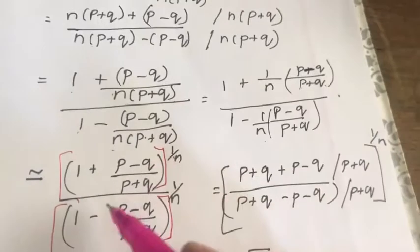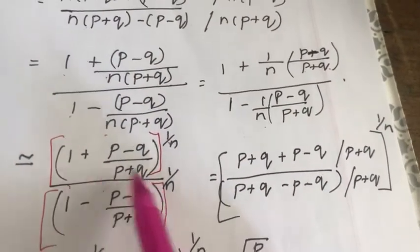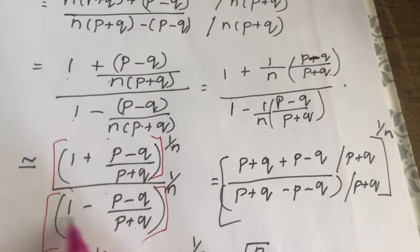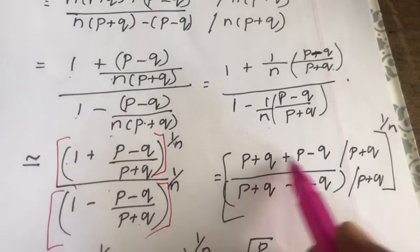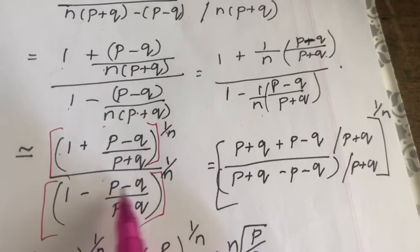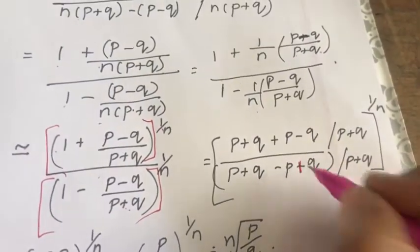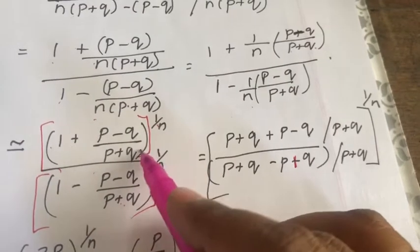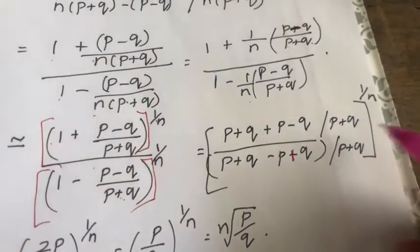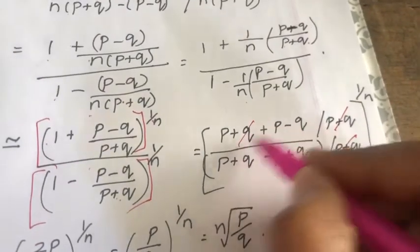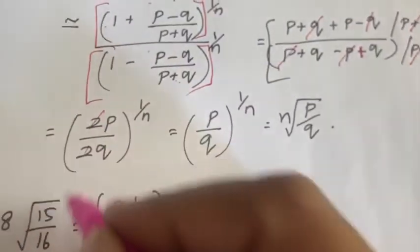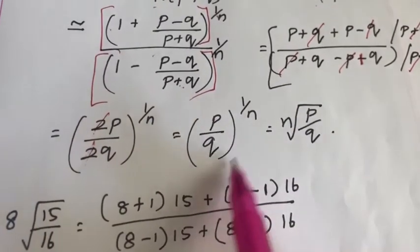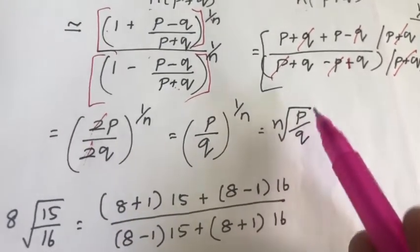This is not exactly equal but approximately equal. We can take p+q as LCM both in numerator and denominator. So in the numerator: p+q + p−q; in the denominator: p+q − (p−q). In the numerator, the q's cancel giving 2p; in the denominator, the p's cancel giving 2q. Divided by p+q for both, giving (2p/2q)^(1/n), and 2 and 2 cancel, giving (p/q)^(1/n), that is the nth root of p/q.